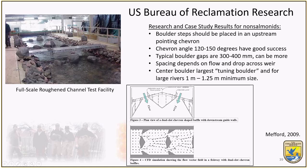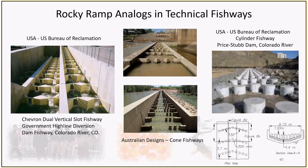They then took this further and asked: could it be done in a technical fishway manner? At the Government Highline Diversion Dam, they made chevrons out of metal and created a dual-slot vertical-slot fishway to get non-salmonids upstream. The dual-slot and chevron concept was key in getting non-salmonids up these facilities. The same concepts were also applied towards cylinder fishways — the Price Stub on the Colorado River to get non-salmonid passage in a side channel — and that has worked well. Interestingly, in the 2000s in Australia, they also designed cone fishways, developed because in the outback they had a lack of rock to make rocky ramps. Using concrete, these have worked extremely well with small species in Australia and also been effective in Southeast Asia, coming in lots of different shapes and forms.